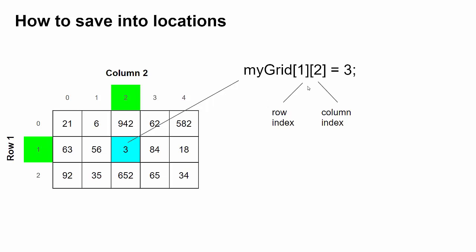Here's an example of how I would save the number three inside this location. I would say myGrid, that's the name of the variable, and then use brackets to say what the row and the column are. So myGrid[1][2], I want to save a value three into there.